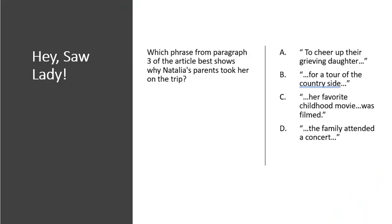Which phrase from paragraph three of this article best shows why Natalia's parents took her on the trip? A, to cheer up their grieving daughter; B, for a tour of the countryside; C, her favorite childhood movie was filmed; or D, the family attended a concert. If you selected A — to cheer up their grieving daughter — you were correct. She was upset she could no longer dance, so they decided to take her to Austria, where her favorite movie was filmed.